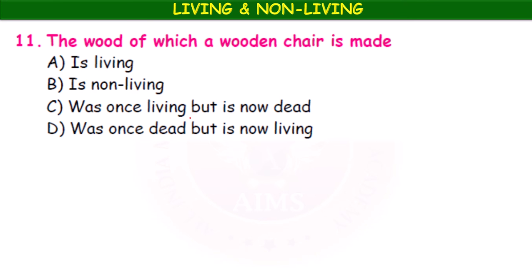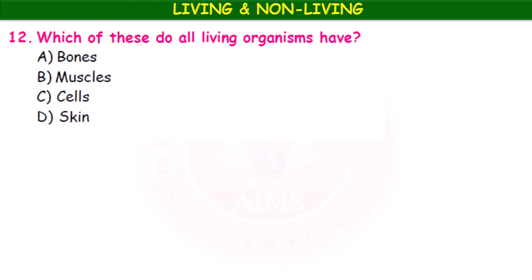The wood of which a wooden chair is made — is it living, non-living, was once living but is now dead, or was once dead but is now living? It was once living when it was a tree, but it is now dead after being made into a chair. Which of these do all living organisms have — bones, muscles, cells, or skin? Cells are the basic unit of all living organisms, so the answer is cells.